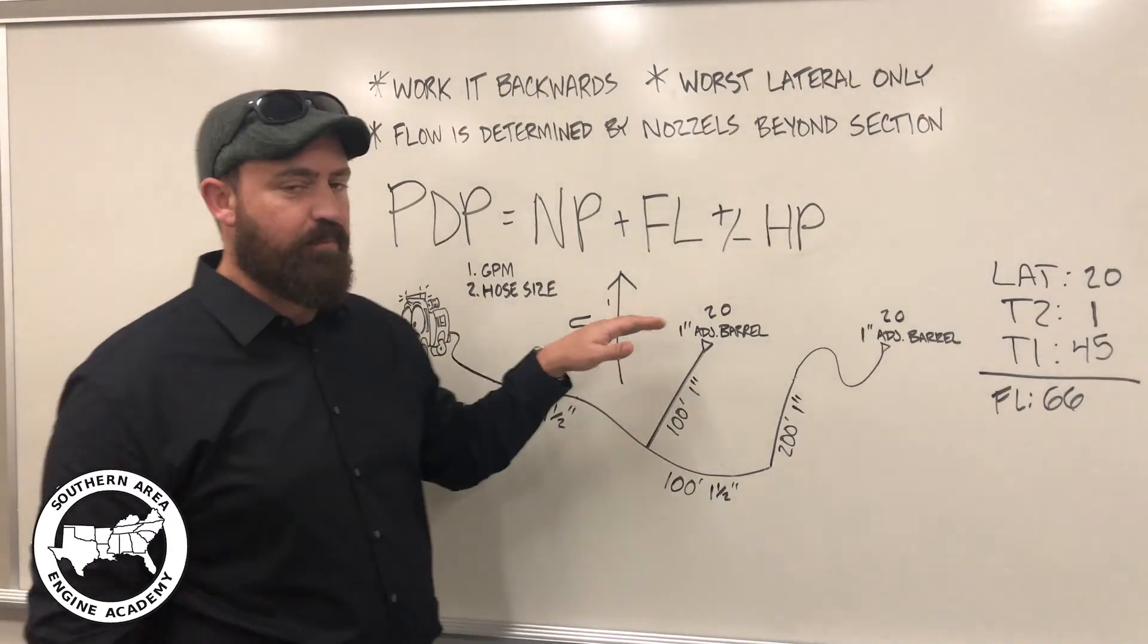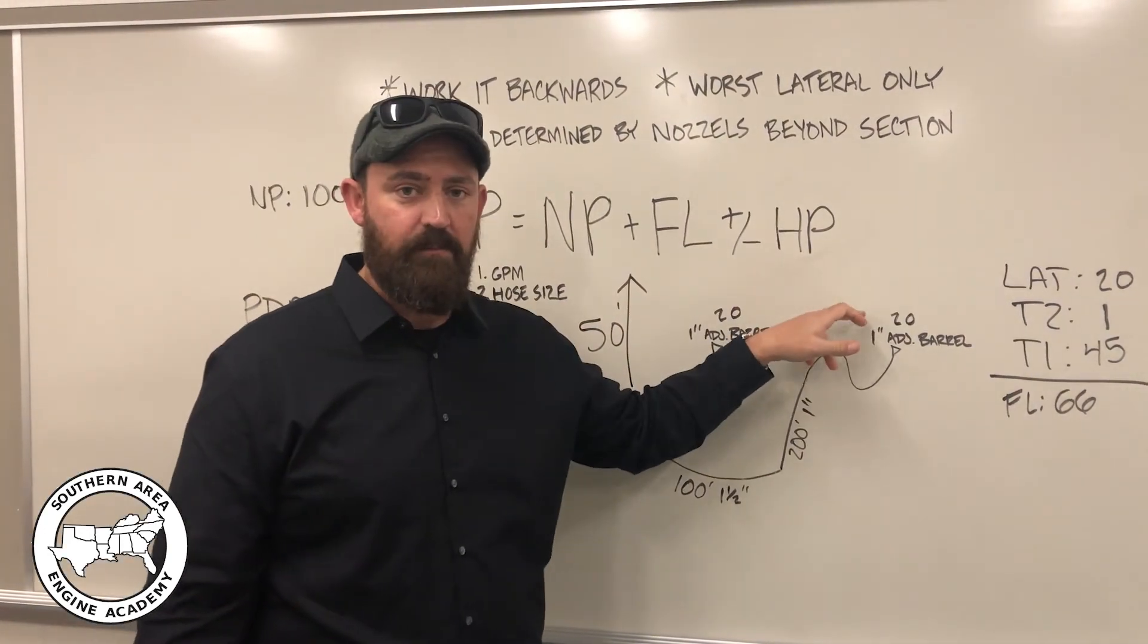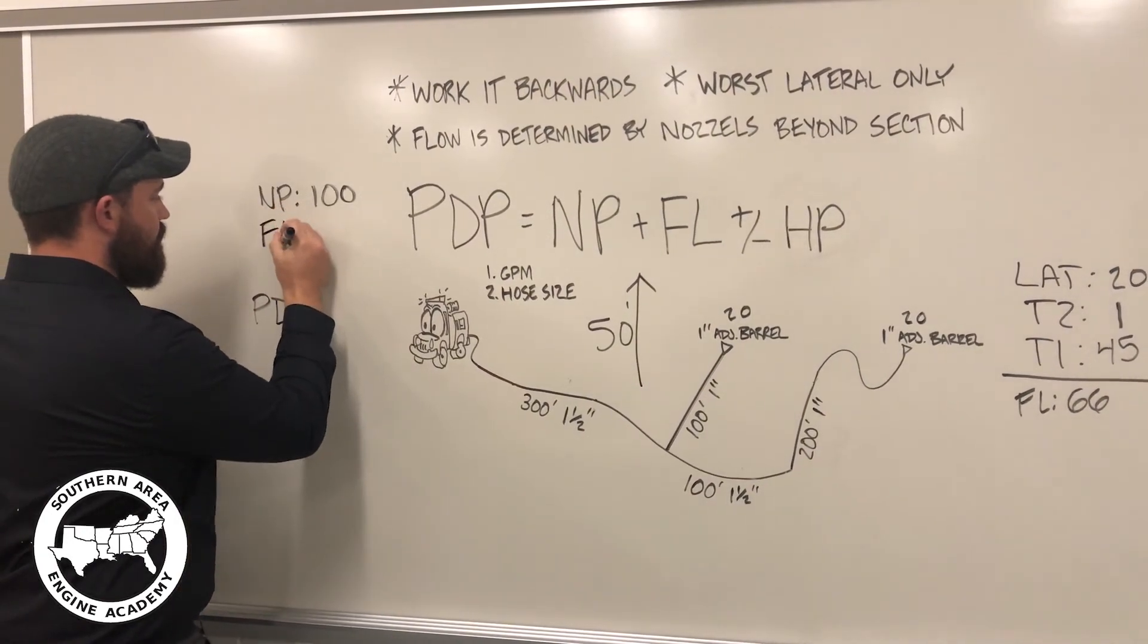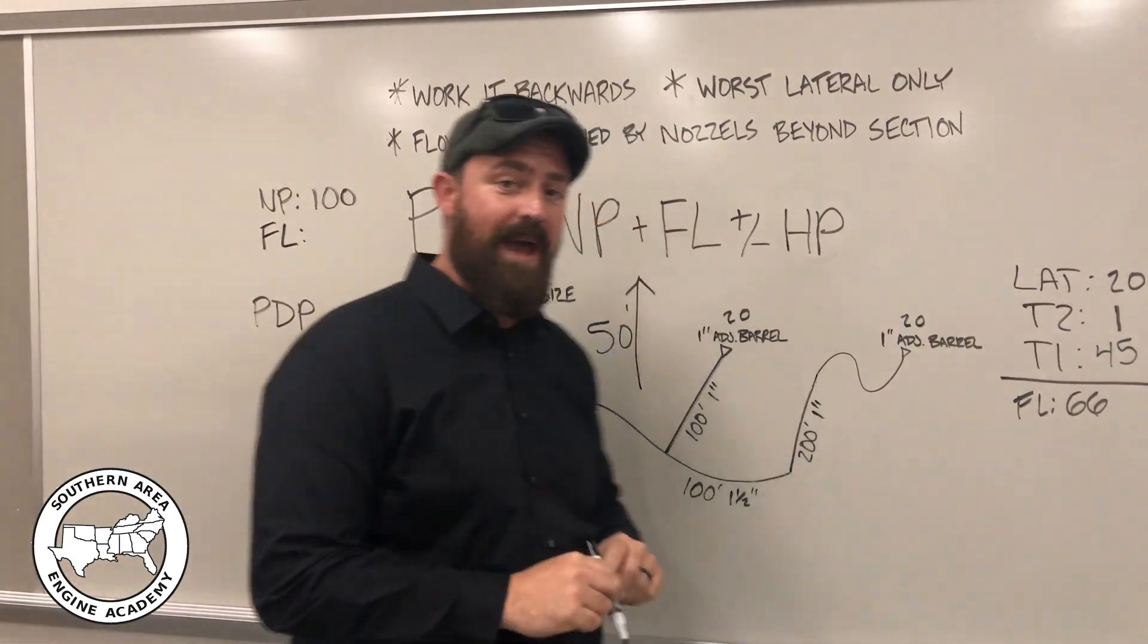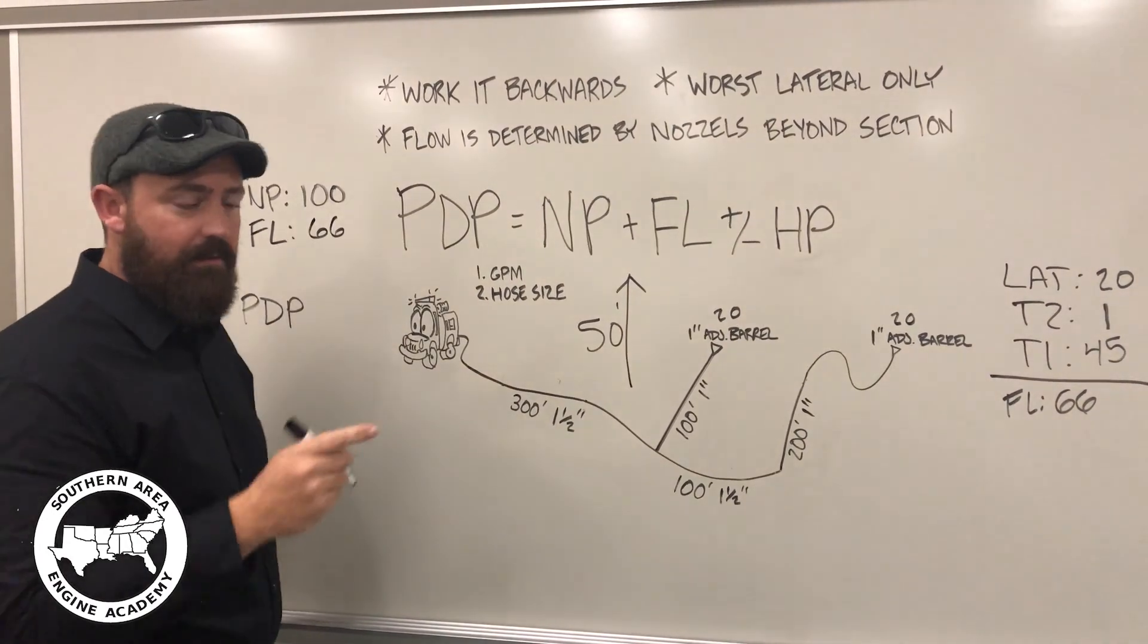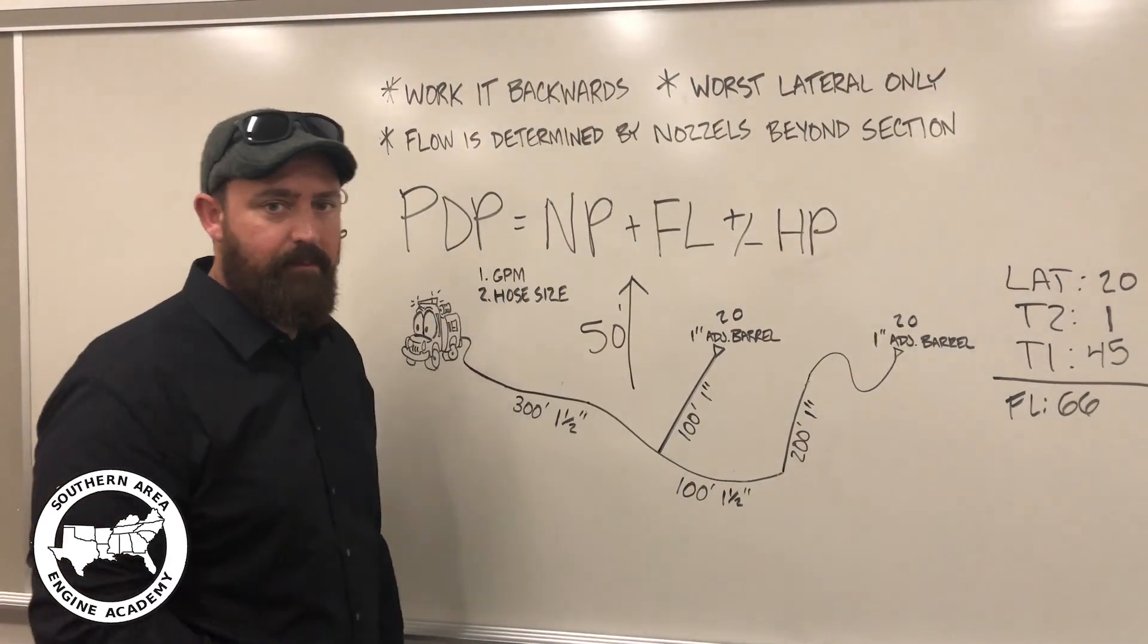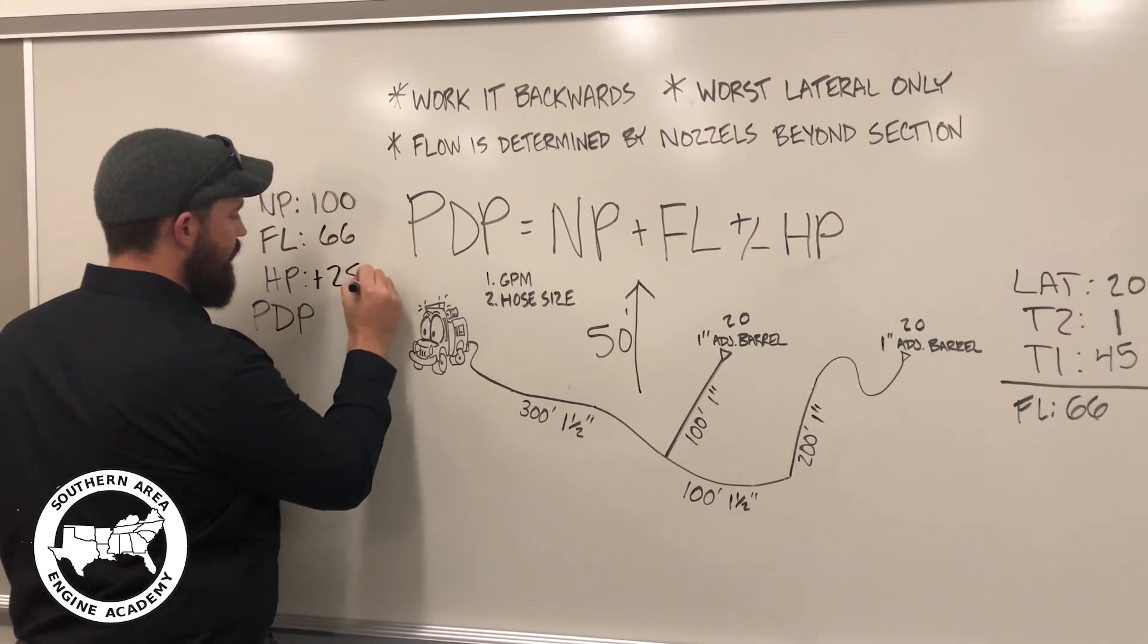So, the next portion is friction loss. We determined the friction loss for the hose lay was 66 pounds, 66 psi pressure. The last component, HP, head pressure. We determined with 50 foot uphill that we needed to add an extra 25 pounds of pressure. So, we're going to add 25 pounds.